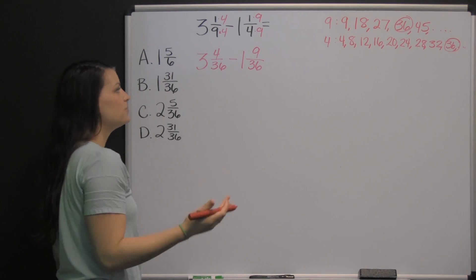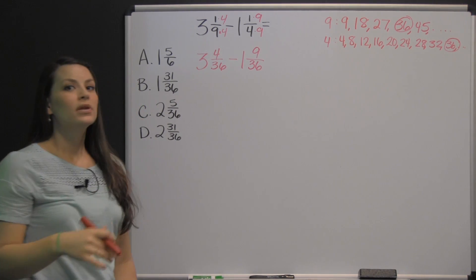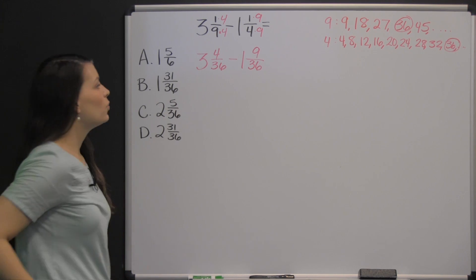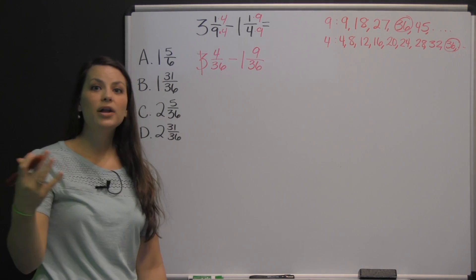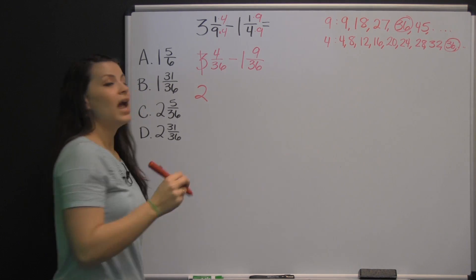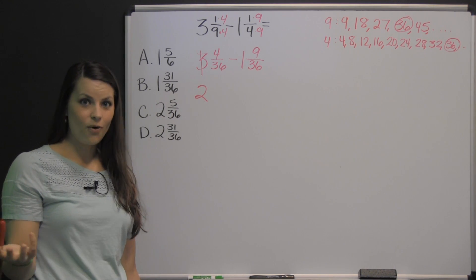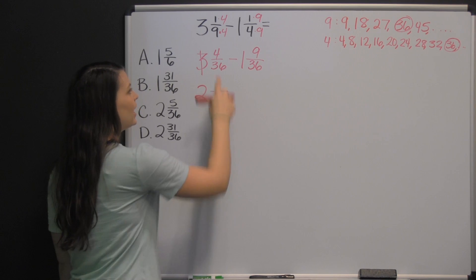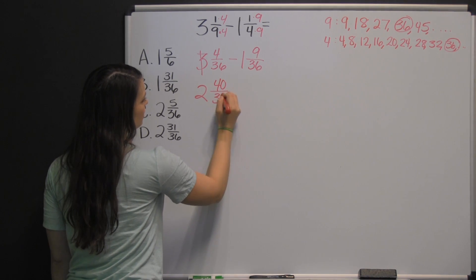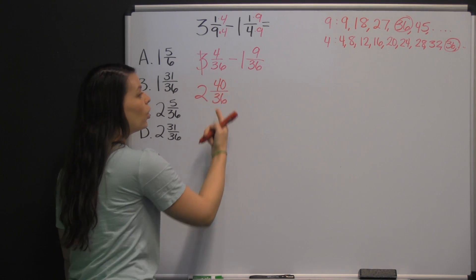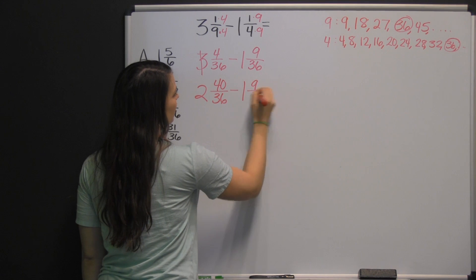Before you subtract, look at your numerators and ask: can I subtract four minus nine? Well, you could, but you'd get a negative number. So what we're going to do is borrow from the three — taking one whole away, making it a two. That one whole is thirty-six thirty-sixths, because that's one whole. We take that thirty-six thirty-sixths and add it to the four thirty-sixths we already have, giving us forty thirty-sixths.